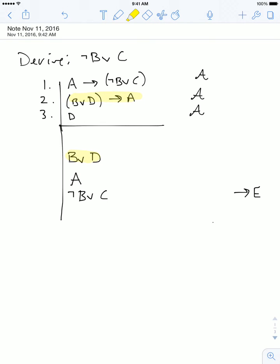And so now we just again ask the same question that we've been asking all along: does the sentence B or D appear anywhere in my assumptions? Now the answer to this question is no, because B or D doesn't appear in our assumptions, but the sentence D does. And that makes things very simple because it means that we can introduce this disjunction.